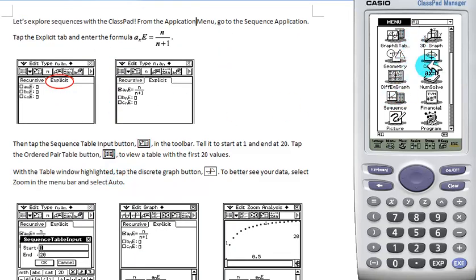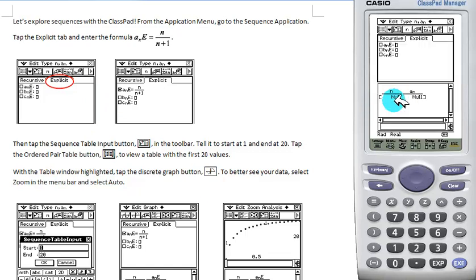From the application menu, we can scroll down to the Sequence application, choose the explicit tab here, and enter our formula n over n plus 1.